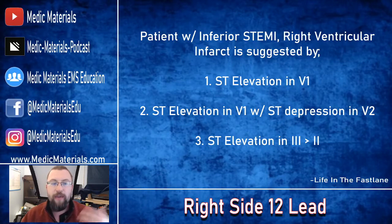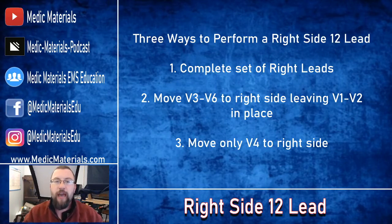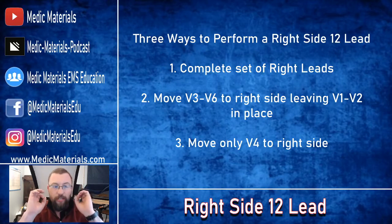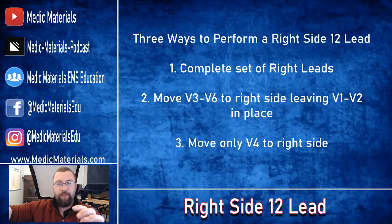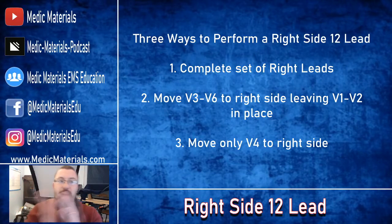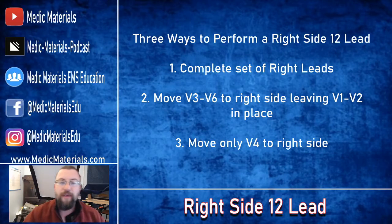These are the clues to get you to do a right-sided 12-lead. There are three distinct ways to do it. You could take all of your precordial leads and move them to the right-hand side — that's what I tend to do. You could just move V3 through V6 to the right side and leave V1 and V2 in place, then take leads 3, 4, 5, and 6 and move them to the right side. Or, when I do a complete set, I leave the V1 and V2 stickers in place and just switch the wires, so V1 starts on the left side instead of the right.